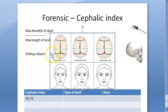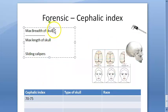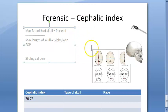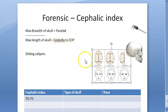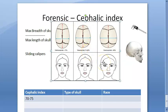So have you understood how you take the length and breadth? Breadth means you will take between the parietal eminences, and length is from glabella to external occipital protuberance. When taking between the parietals, that will usually be less. As you can see here, the length is more — mostly the length is more.